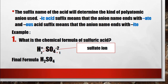The suffix of the acid name determines the kind of polyatomic anion you choose. An '-ic acid' suffix means the anion name ends with '-ate', while an '-ous acid' suffix means the anion name ends with '-ite'.